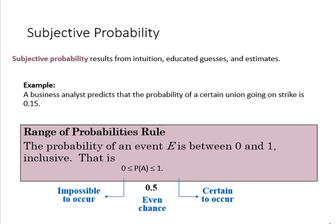So if a business analyst predicts the probability of a union going on strike is 0.15, that business analyst probably has a lot of experience, hopefully, with dealing with unions and so forth.